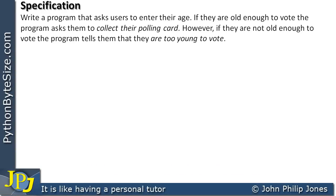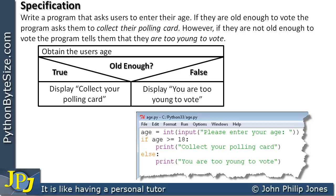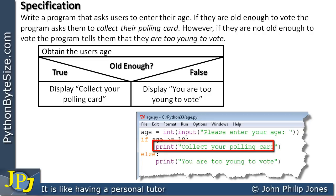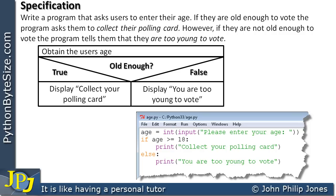The previous video in the playlist looked at this specification and below it we can see the NS chart used to design for this specification, and here we can see the computer program. When the program runs, this line will execute and the user will enter a value for the person's age. We're now going to amend this specification to introduce another feature of the Python language: the nesting of selection constructs within each other.